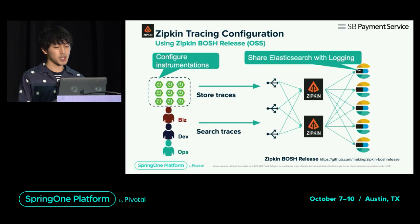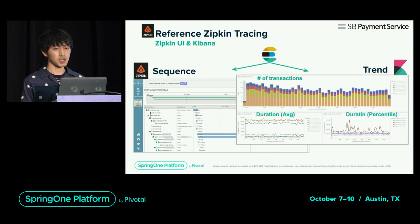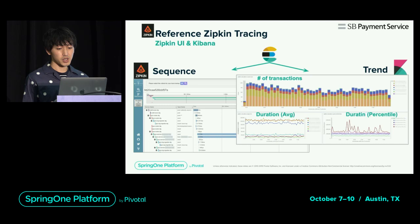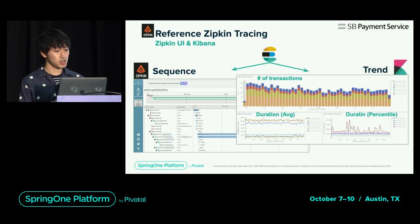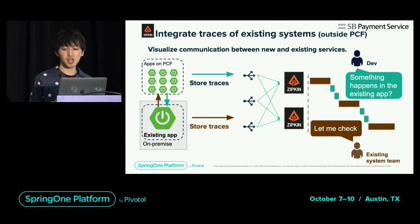Trace stored in Elasticsearch is used not only for reference in the Zipkin UI, but also for trend analysis using Kibana. By summarizing for each purpose, we visualize the number of transactions and average and percentile of the processing time. The processing time can be calculated from the application log, but the trace output by Spring Cloud Sleuth already contains that item, so it is easy to visualize. We are also integrating traces for existing apps outside of Pivotal Application Service, making it possible to visualize the sequence of communication with existing services.